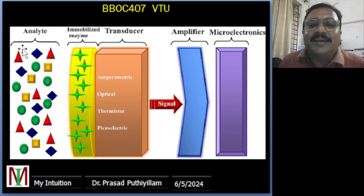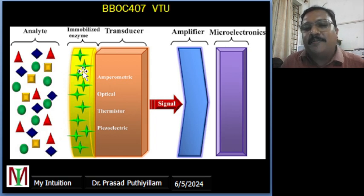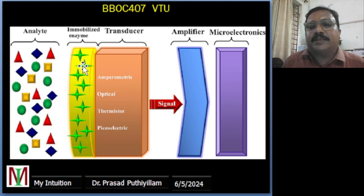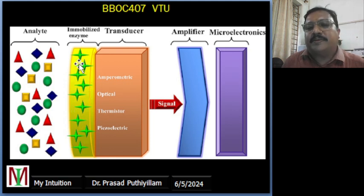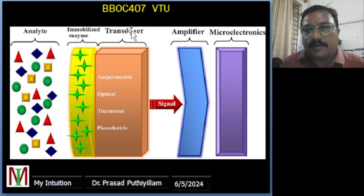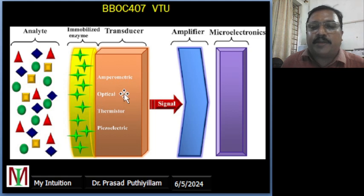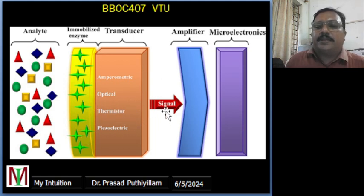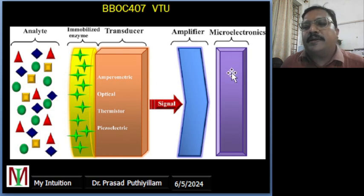I am not going into detail here. You can see the analyte molecules in different colors in this representation. This is the enzyme — different enzymes are immobilized into this particular shape. Different types of enzymes can be used for different applications based on the transducers needed. It can be amperometric, it can be an optical sensor, thermistors, or piezoelectric, which will take the signal, amplify it, and pass it to the microelectronics.